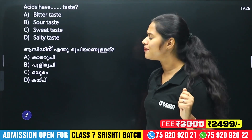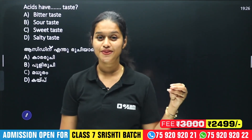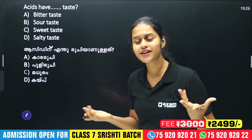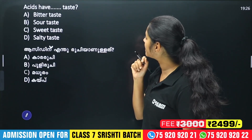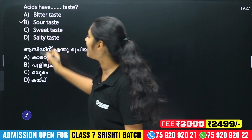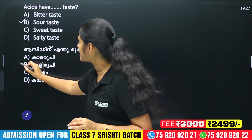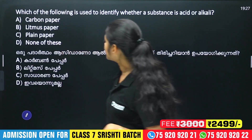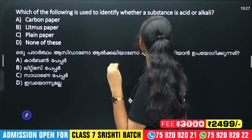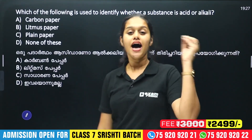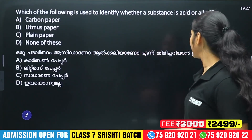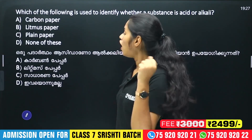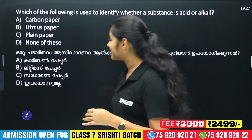If you look at 4 options, what is the taste of acid? We are learning about acid. Option A is Carbon Paper, Option B is Litmus Paper, Option C is Plain Paper, Option D is None of These.